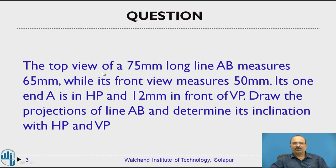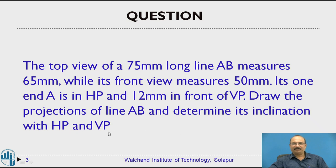The top view of a 75mm long line AB measures 65mm, while its front view measures 50mm. End A is in the HP and 12mm in front of the VP. Draw the projection of line AB and determine its inclination with HP and VP.